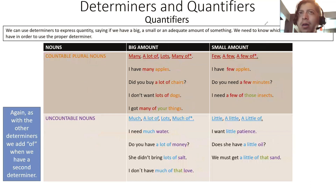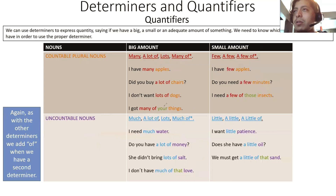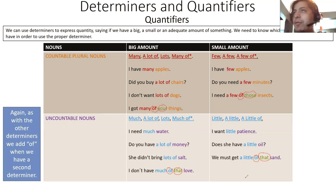I hope it's starting to make sense. As with the other determiners, we add 'of' when we have a second determiner. Second determiner → 'many of.' Second determiner → 'much of.' Second determiner → 'a few of.' Second determiner → 'a little of.' It is always the same thing. So let's move on.